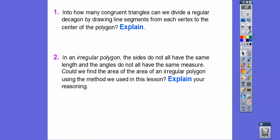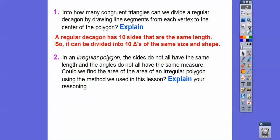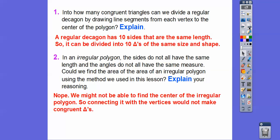Let's answer a couple of questions. How many congruent triangles can we divide a regular decagon into? Well, a decagon has 10 sides, so a regular decagon can be divided into 10 congruent triangles. Could we find the area of an irregular polygon using this method? No — we can't, because we might not be able to find the center, and even if we could, connecting the vertices wouldn't make congruent triangles, so we couldn't use our formula. Hope that makes sense — take care!